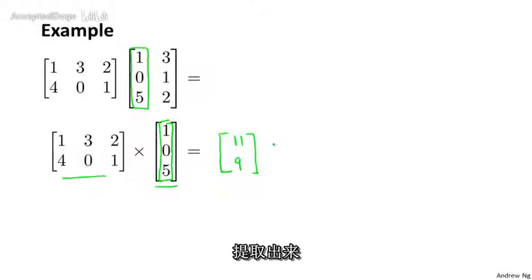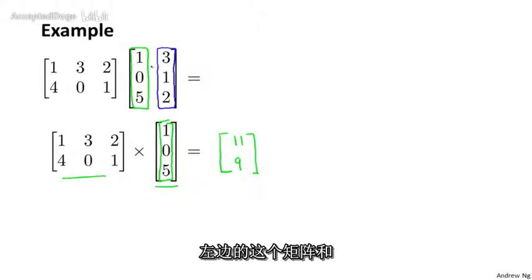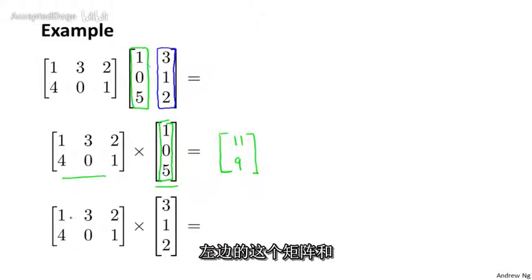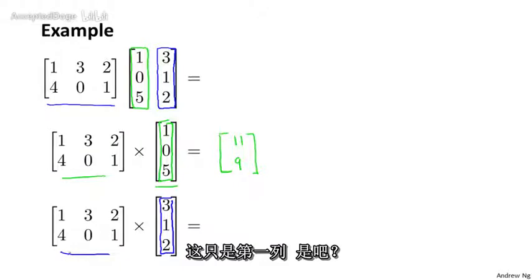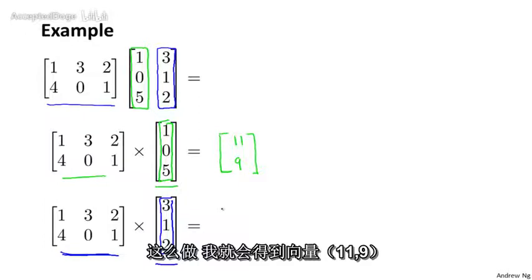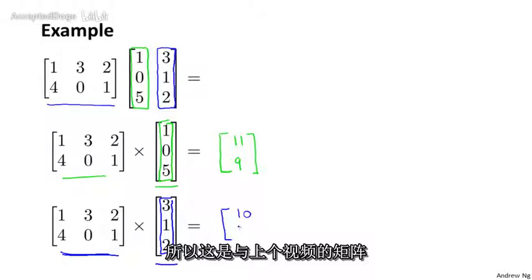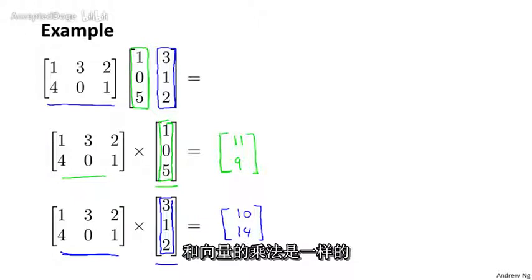Then the second thing I'm going to do is pull out the second column of the matrix on the right and take the matrix on the left and multiply it by that second column. Again this is a matrix-vector multiplication step from the previous video, and it turns out that if you multiply this matrix and this vector you get 10, 14. If you want to practice your matrix-vector multiplication, feel free to pause the video and check this product yourself.